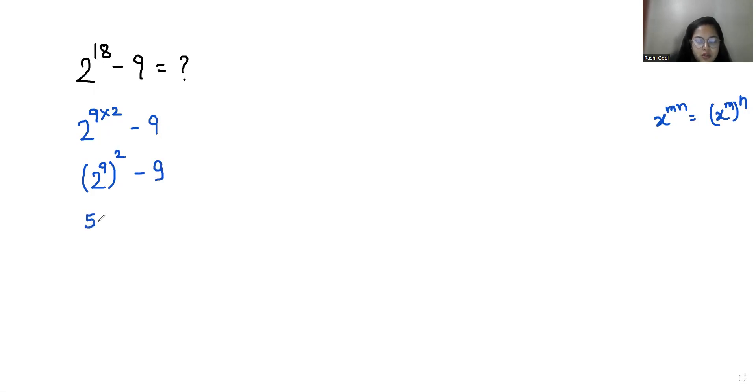2^9 is 512, so we have (512)^2 - 9. At this point you can solve this question multiple ways. You can write 9 as 3^2 and use the identity a^2 - b^2, but I'm going to solve it by splitting.